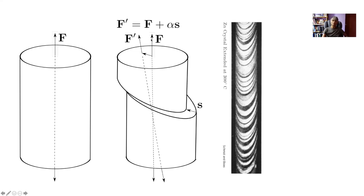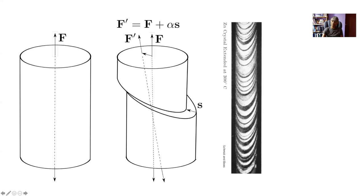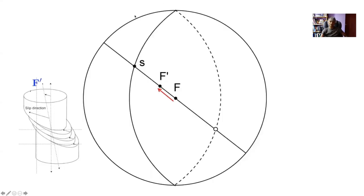Instead of the force axis rotating, it is more common to keep the force axis constant — for example, when pulling in a testing machine. Therefore, instead of the force axis rotating, the crystal itself rotates to satisfy this equation. This implies that F' is a linear combination of F and alpha·S, meaning all three vectors are coplanar, which can be represented on a stereographic projection.